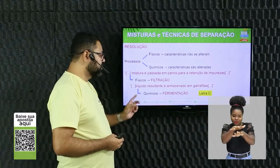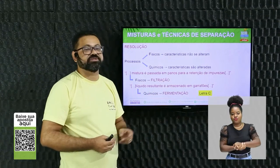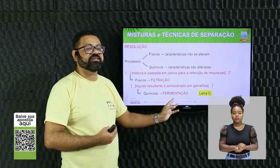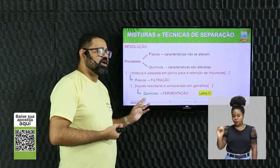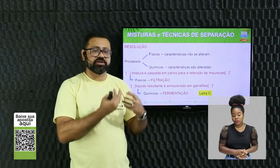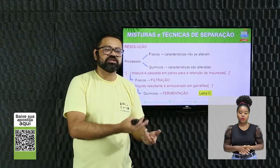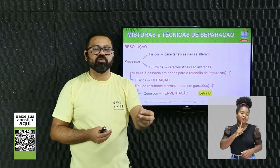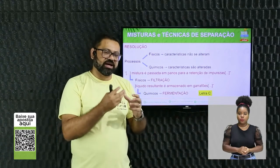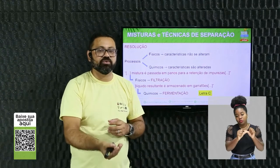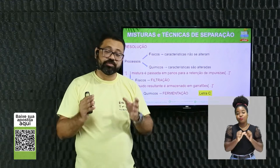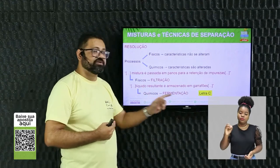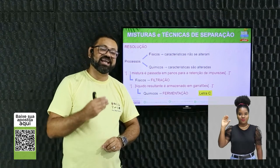O líquido armazenado nos garrafões inicia a fermentação, que é um processo químico: havia suco de laranja e, após, teremos vinho, com concentração de etanol. O açúcar é transformado em álcool — a matéria muda totalmente. Portanto: filtração e fermentação. A resposta correta é a letra C.